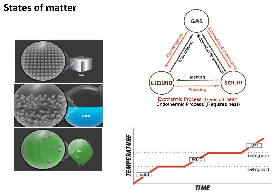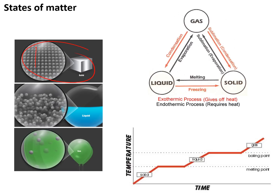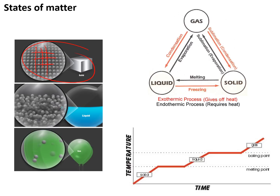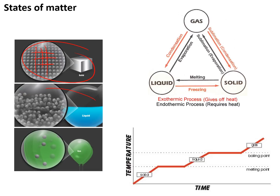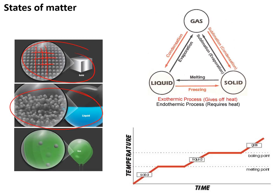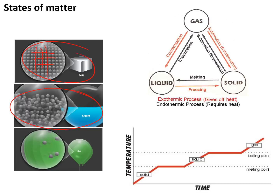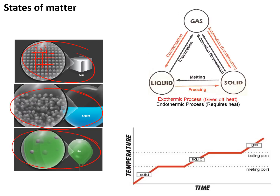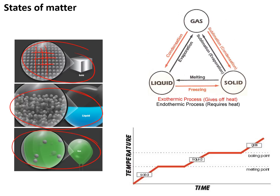States of matter. Solids have particles that are touching, arranged in regular rows, and the particles are just vibrating around a fixed point. In a liquid the particles are touching, they're also moving, and are in a random arrangement. In a gas the particles are not touching, they're moving very quickly, and the arrangement is random.